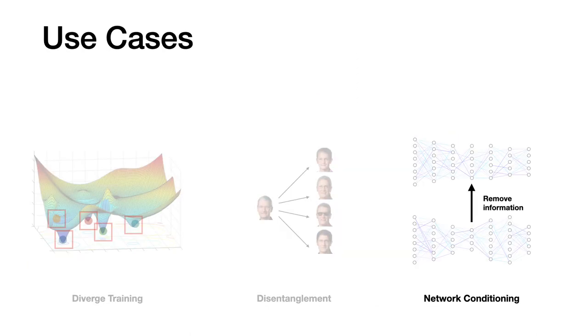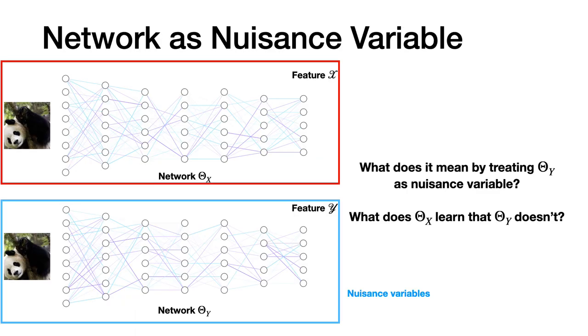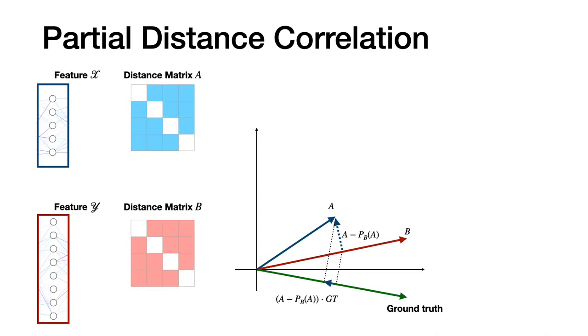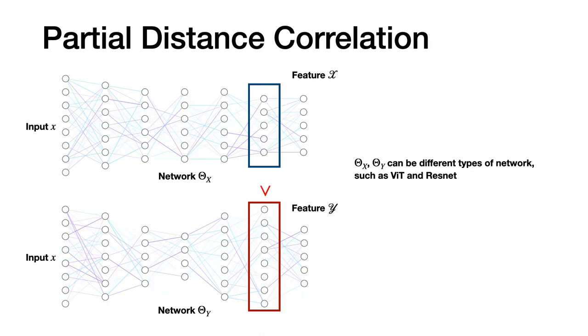Finally, we can also work on a novel and interesting use case, condition one network on another network. Sometimes we need to control for the nuisance variables to figure out the influence of the main variables. But what if the network itself is the nuisance variable? So the question of removing the random variable becomes, what does one network learn that another one does not? With the help of partial distance correlation, we can use a similar strategy as linear regression to project the distance matrix A onto distance matrix B and only use the residual to compute the correlation. Thus, we can ask or answer questions like what does ViT learn that ResNet does not, and so on.